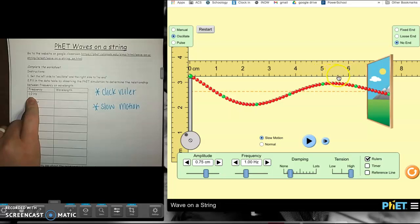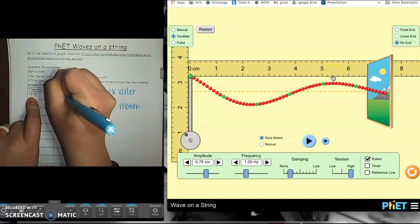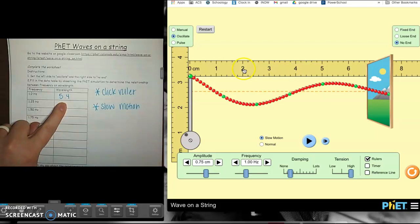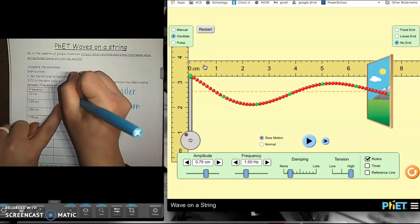So two, four, six, eight, and then six. So five, and then our crest top is going to be right here. So that's 5.4. So that's our wavelength, 5.4. Now make sure that you have units. So we're using centimeters as our units.